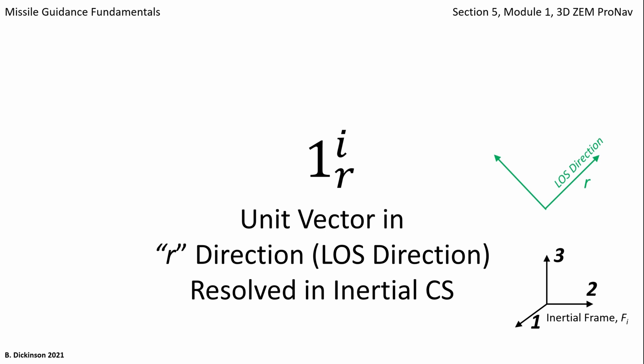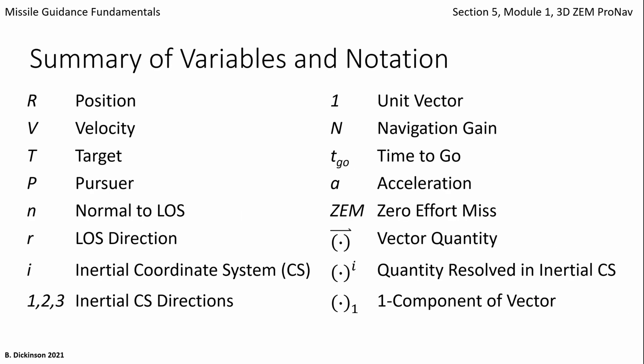One is used as a unit vector. This is the unit vector along the line of sight direction resolved in the inertial coordinate system. Here's a summary of the variables and notation for the forthcoming material. This can be used as a reference in case you need to come back.